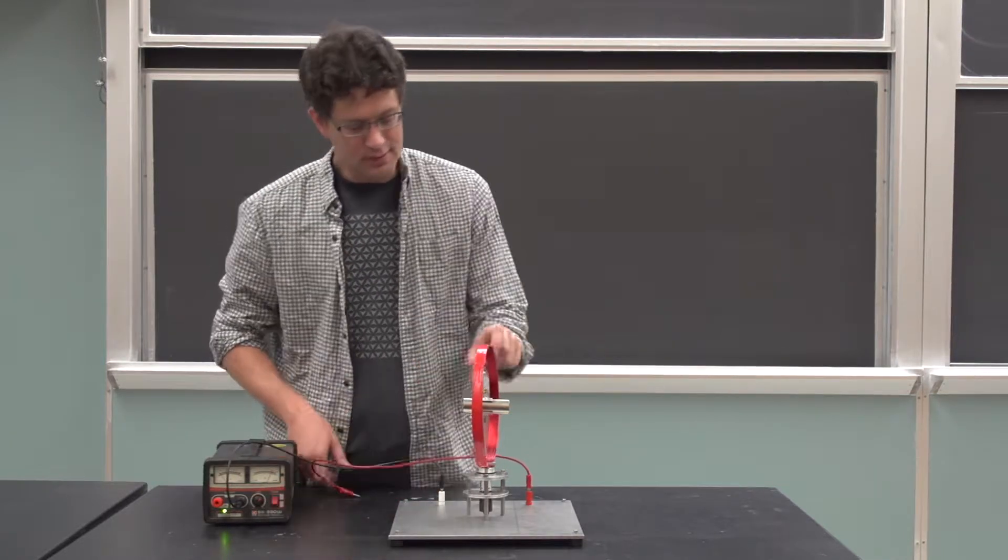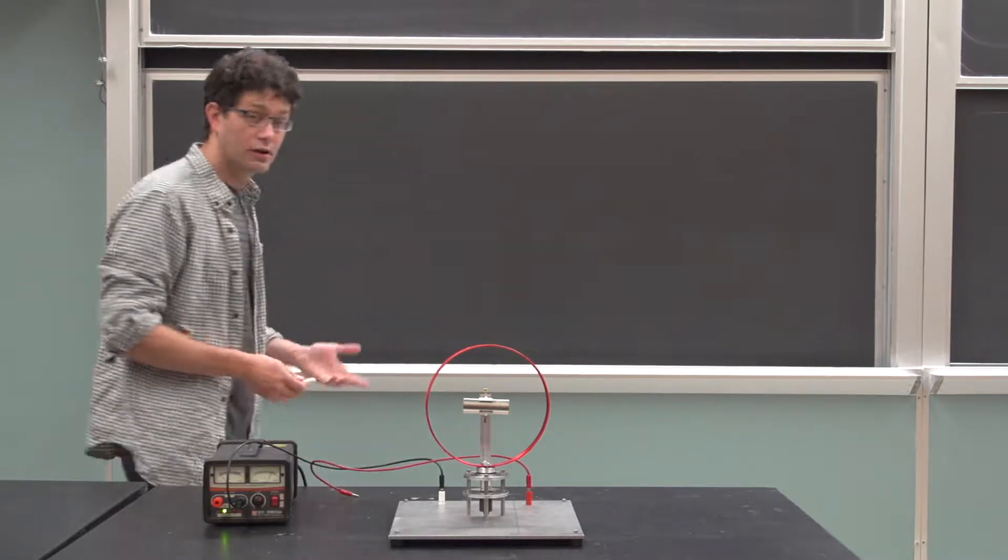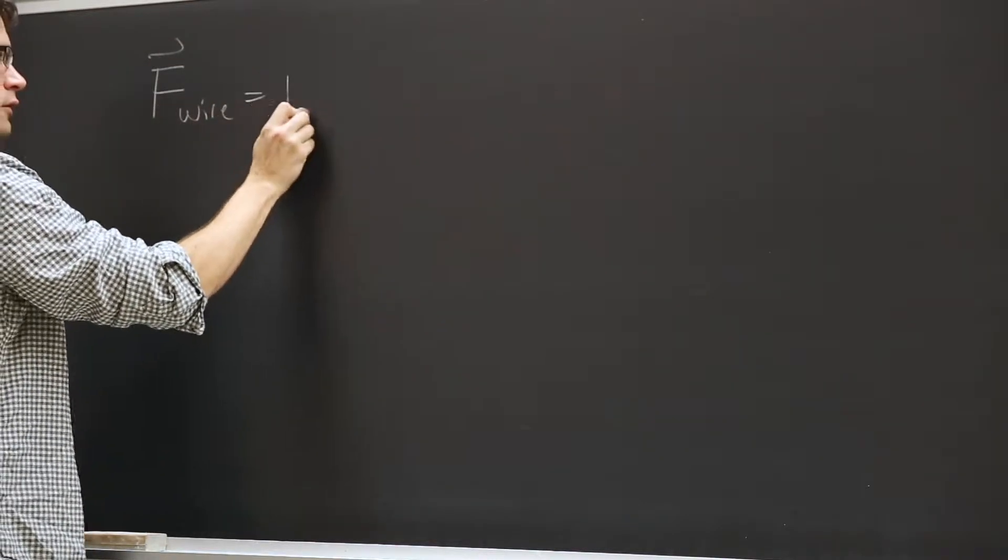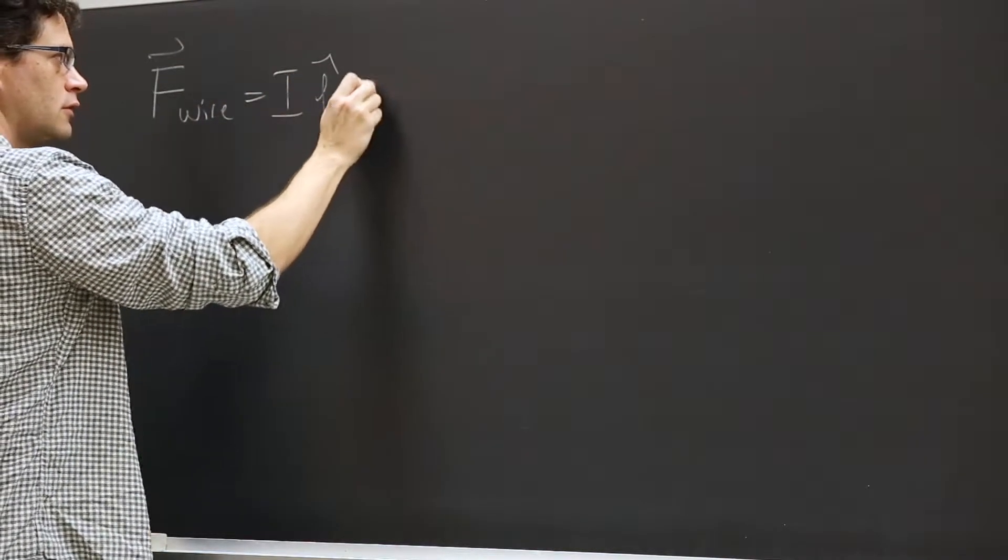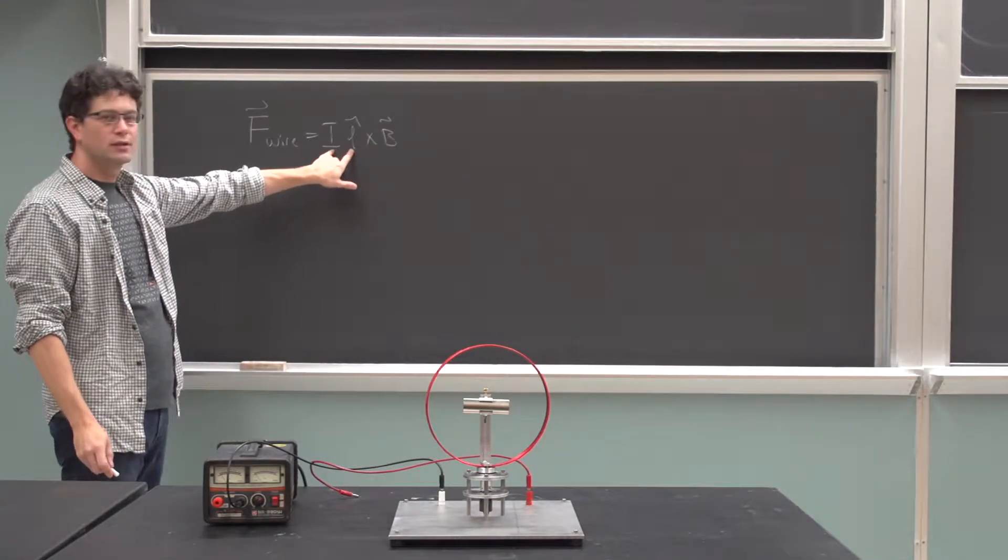So let's look at this. This is a good example again of the right-hand rule. So what is our general law here? If you remember, if you have a magnetic field and you have a wire with some current in it,